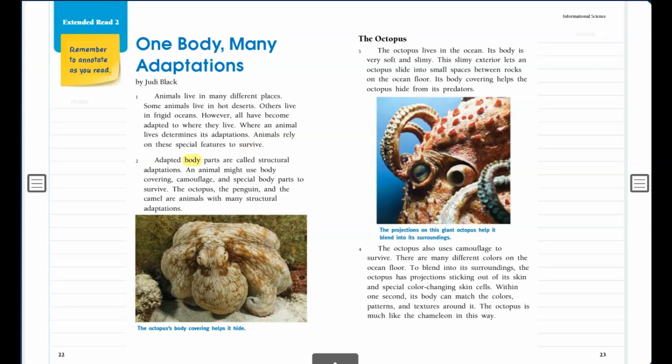Adapted body parts are called structural adaptations. An animal might use body covering, camouflage, and special body parts to survive. The octopus, the penguin, and the camel are animals with many structural adaptations.